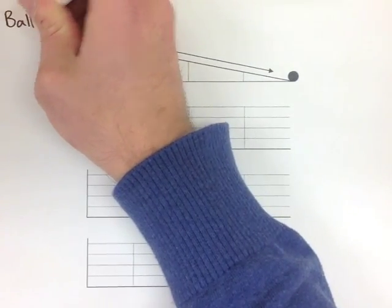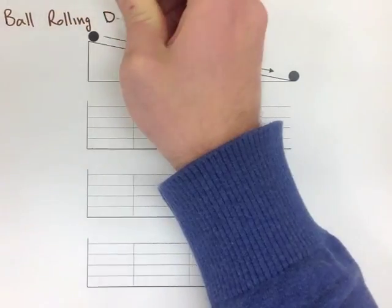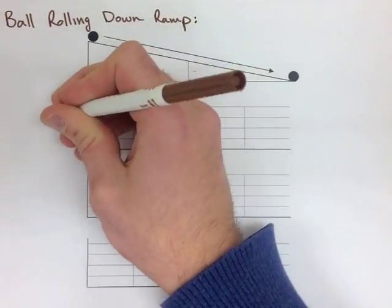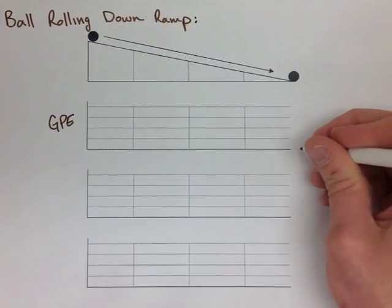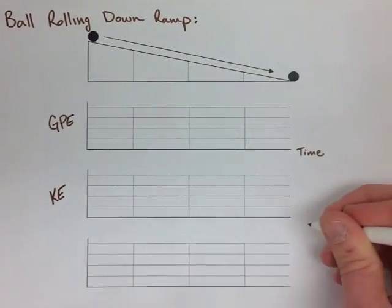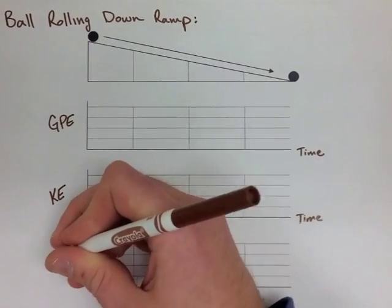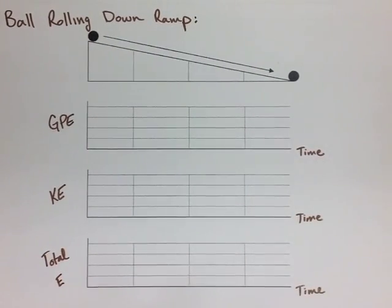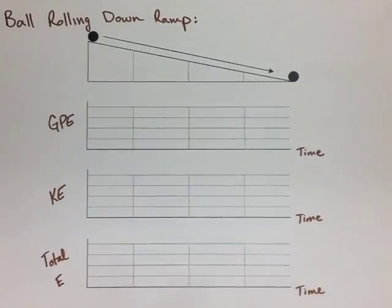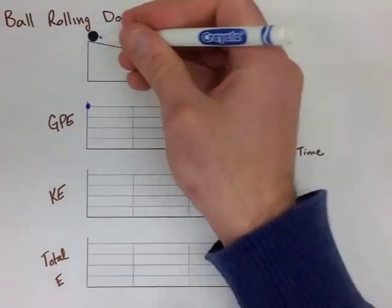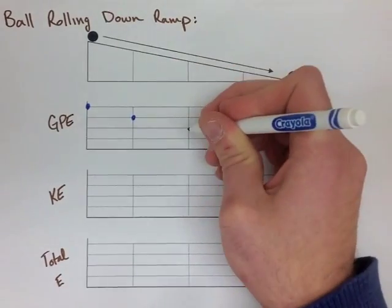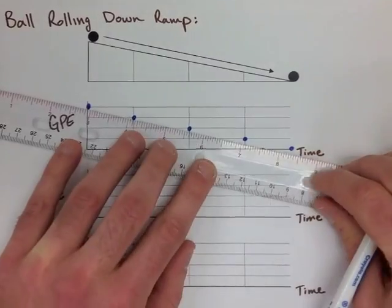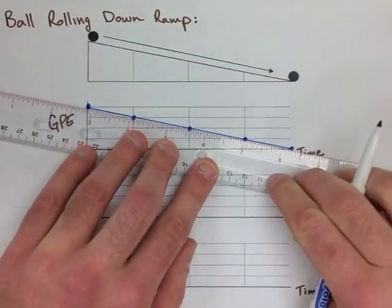For this next example, we're looking at a ball rolling down a ramp. We're going to make three graphs. One's going to be gravitational potential compared to time. One will be kinetic compared to time. And one will be total energy compared to time. Now, we're going to look at it at four points as it's rolling down that ramp. If we look at the ball at the top of the ramp, let's say it has four joules of energy. As it's rolling down, it's losing its gravitational potential energy at each spot.